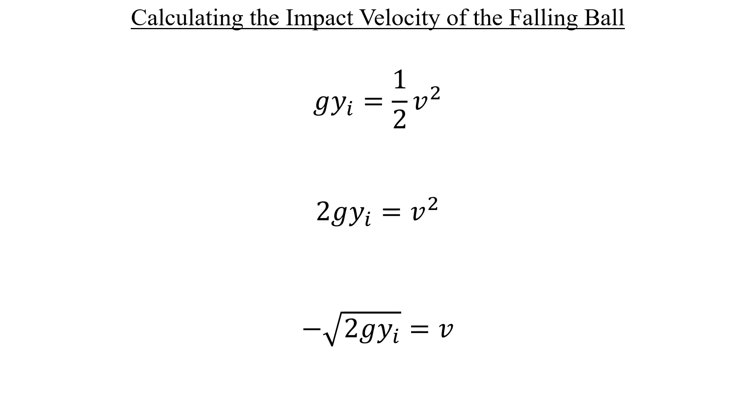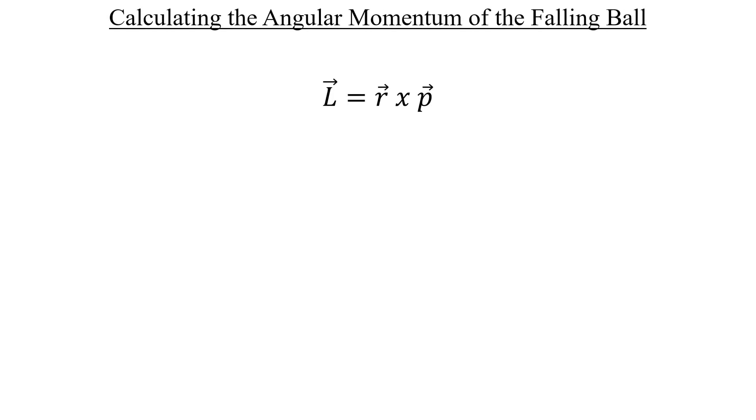So instead we're going to use the negative root. Now that we have the downwards impact velocity, we can move on to stage 2, which is to use this stage 1 result to get the ball's angular momentum. To do that, let's introduce a new vector equation. Here we have the angular momentum vector on the left, and it's equal to the cross product of a position vector and the momentum vector.